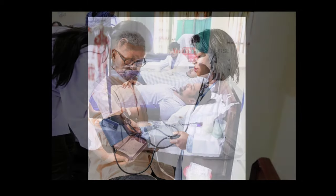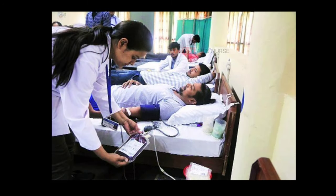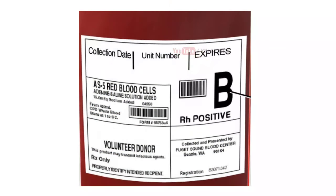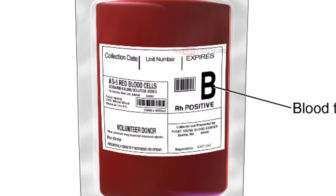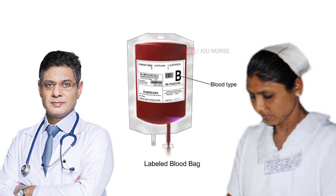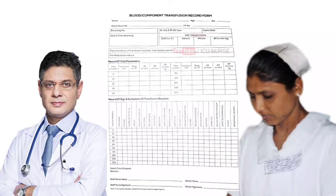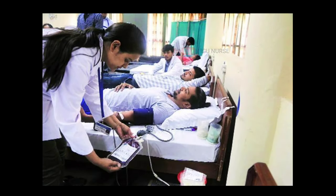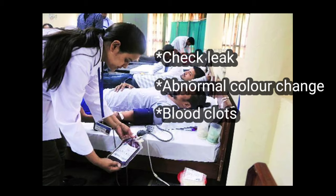Check and record vital signs of the patient before starting the blood transfusion. After receiving the blood product, check if you received the same blood product which the doctor advised, like PRBC, whole blood, etc. Check the label of the blood product for blood group, collection date, expiry and all other details to confirm they match the patient's data. Get the blood bag double checked by your nursing in-charge and doctor on duty and get their signatures on the blood transfusion monitoring sheet. Check the blood bag for any leak, abnormal color change, or any blood clots.